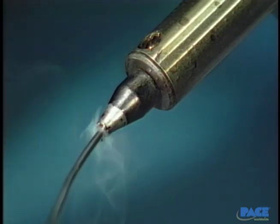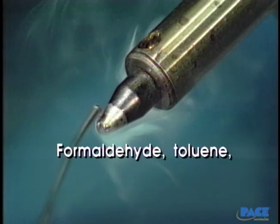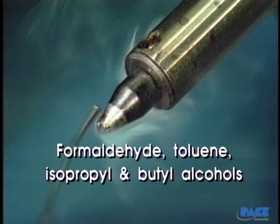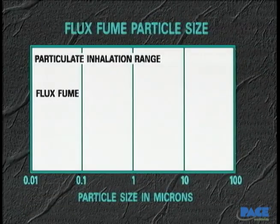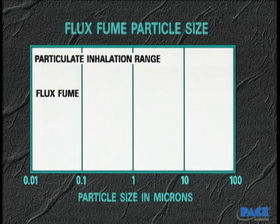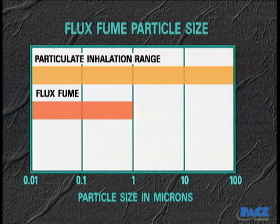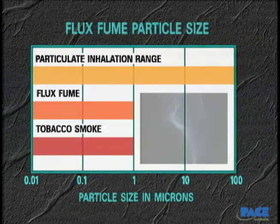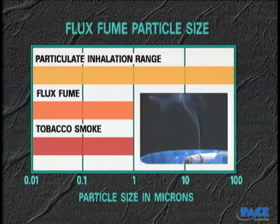When flux is heated, a variety of harmful gases are generated, such as formaldehyde, toluene, isopropyl and butyl alcohols, and hydrochloric acid. In addition to the gaseous components of heated flux, significant concentrations of airborne particulates are created, ranging in size from 0.01 micron to 1 micron. Flux fumes parallel the particle inhalation range of tobacco smoke, a well-known lung pollutant and carcinogen.